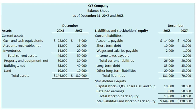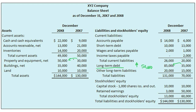Its long-term debt increased by $50,000 from $35,000 last year to $85,000 this year. It seems clear that at least $20,000 of this debt was used to purchase additional property, but what was the remaining $30,000 used for? The statement of cash flows would help us answer this question.